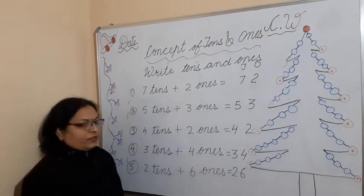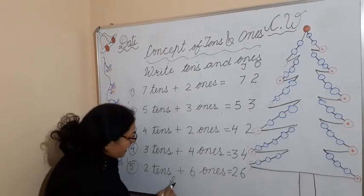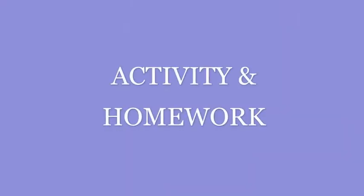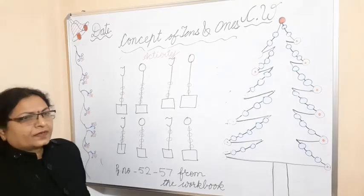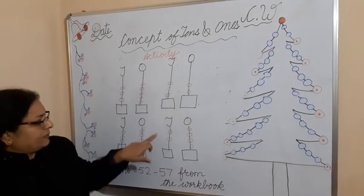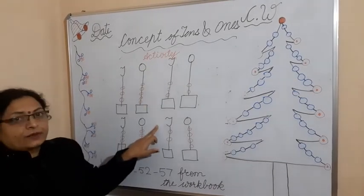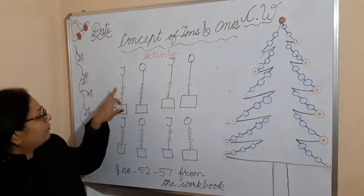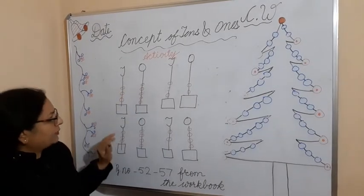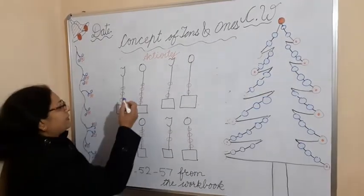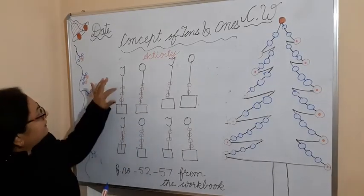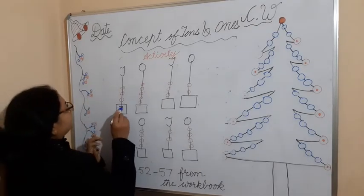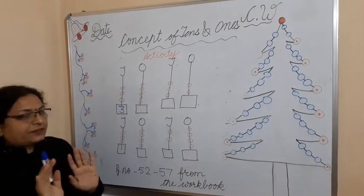I am giving you homework and you should also practice from the workbook. Now let's do one activity together. How many tens are here? Count: one, two, three — three tens. Write three under tens. The rest of the activities you do at home.